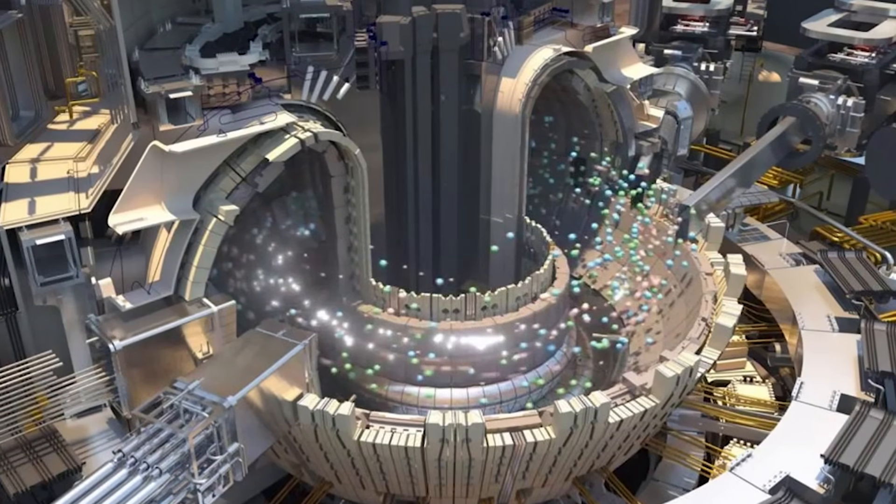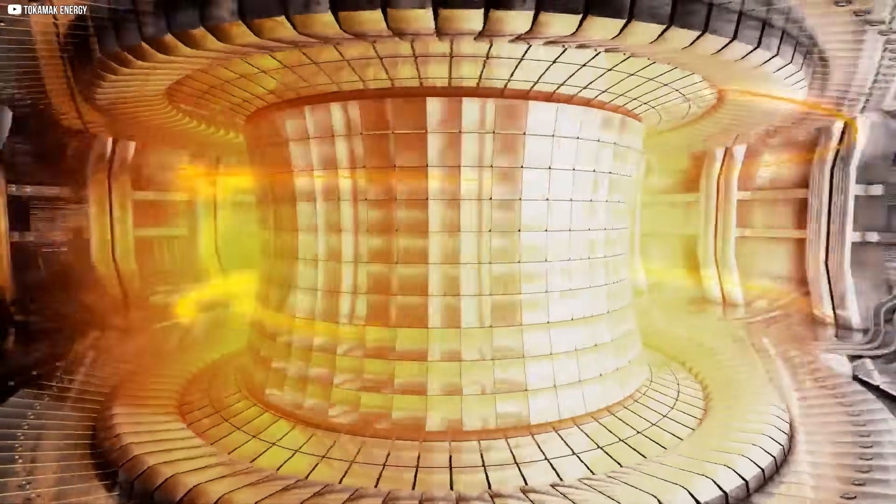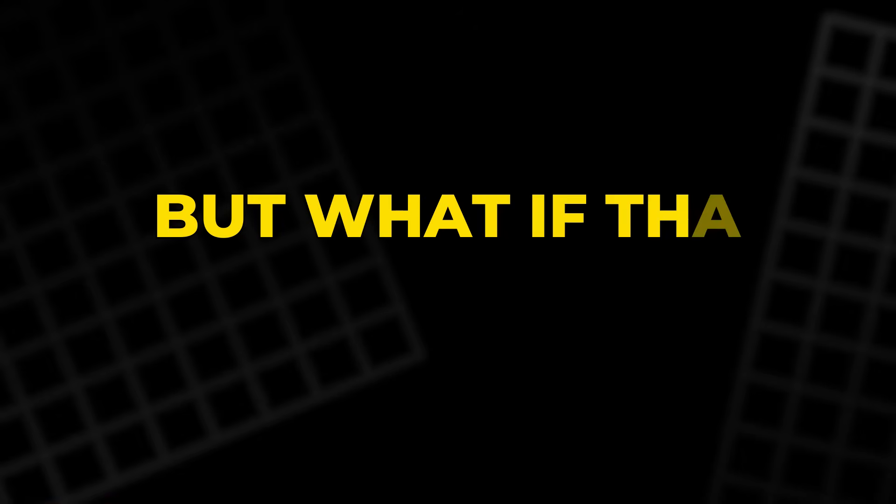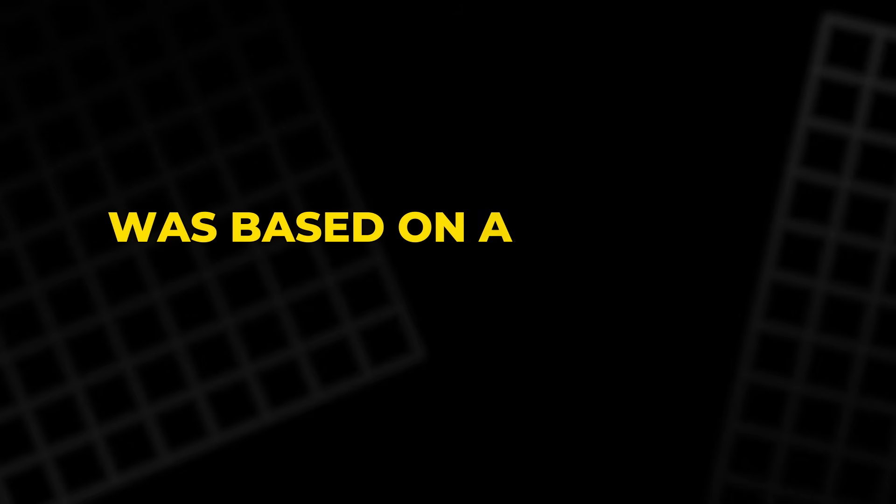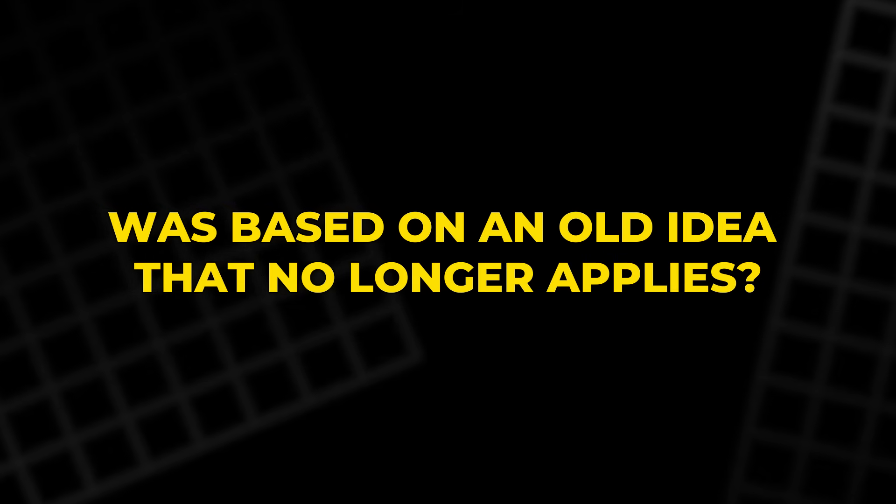And that's where the limitations start. The triple product tells us where the line is. Beyond it, reactors become unstable. But what if that line isn't fixed? What if one of its most important limits, ion density, was based on an old idea that no longer applies?